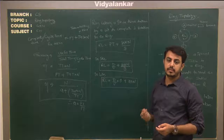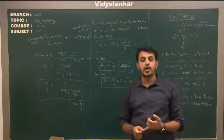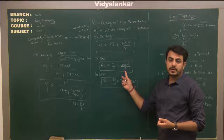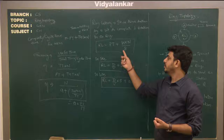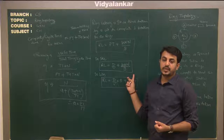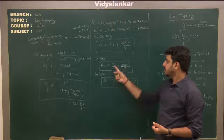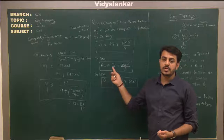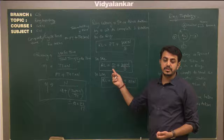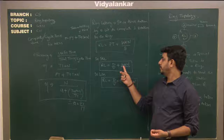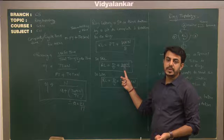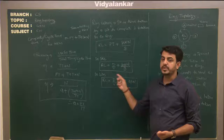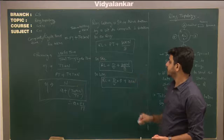Ring latency can be calculated in bits or in seconds. When calculating in seconds: propagation delay is distance divided by velocity, giving units of seconds. Every station contributes a bit delay b, so we add (b × n) divided by bandwidth B. Checking units: distance (meters) divided by velocity (meters per second) gives seconds; bit delay (bits) multiplied by n divided by bandwidth (bits per second) also gives seconds. So the total unit is seconds.